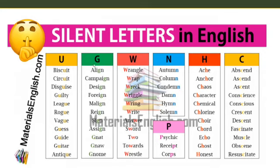Then silent G. 'Align' — it's not 'align' (the sound of G is 'guh'), so it's 'align.' 'Campaign,' 'design,' 'foreign,' 'melon,' 'win,' 'sign,' 'assign,' 'gnat,' 'gnome.' In all these words, the letter G is silent.